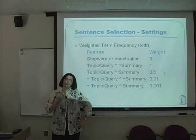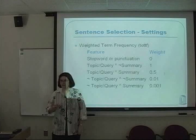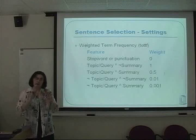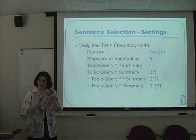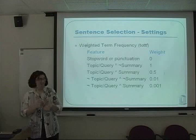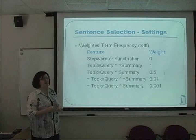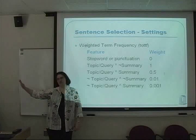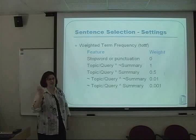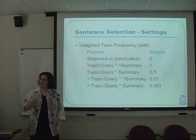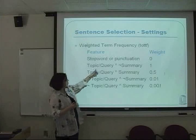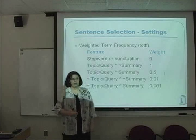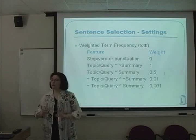We sat down and thought about what sort of words we really want to include. If we have a summary of a number of sentences, we want to pick the next sentence to maximise some function. Stop words and punctuation don't count for anything. But if I have a sentence with lots of topic or query words, and those words are not in the summary, they're really important — I want to give them a score of 1.